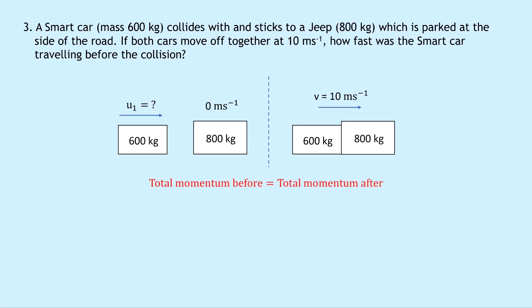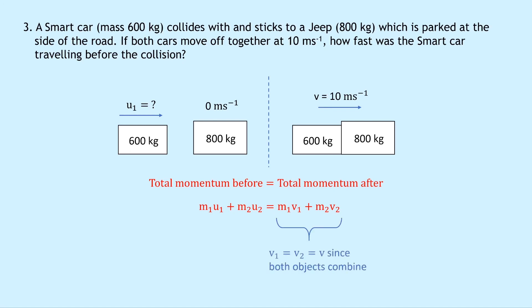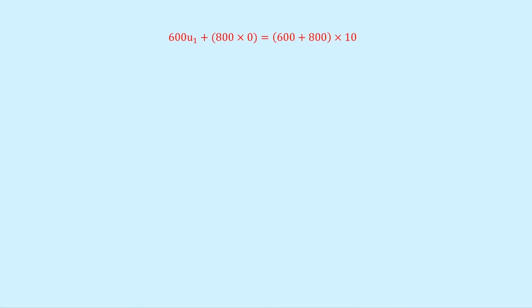Using conservation of momentum: m1·u1 + m2·u2 = (m1 + m2)·v. Substituting: 600·u1 + 800 × 0 = (600 + 800) × 10. The zero term disappears, giving 600·u1 = 14,000. Dividing both sides by 600: u1 = 23.3 meters per second. That's all for this video — hope you found it useful. Give it a thumbs up, subscribe, and I'll see you in the next one. Take care.